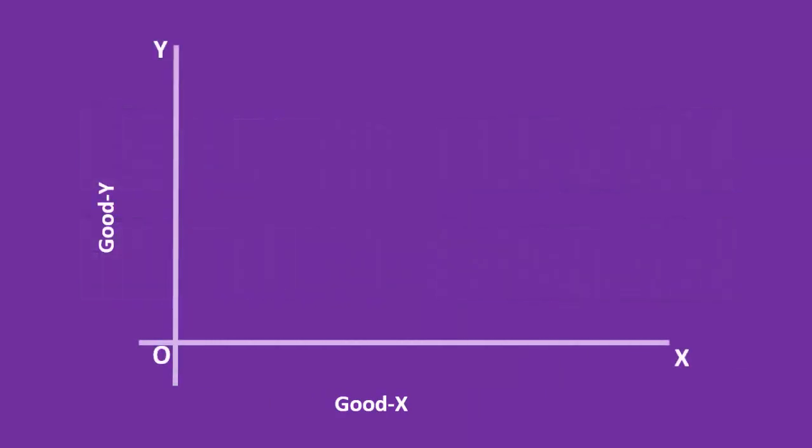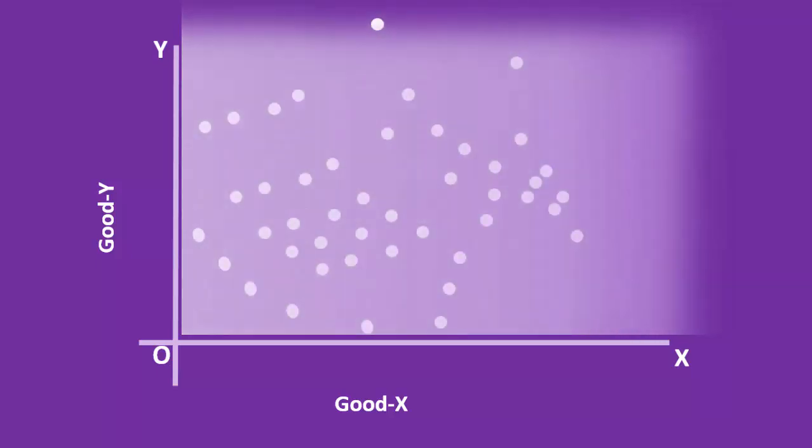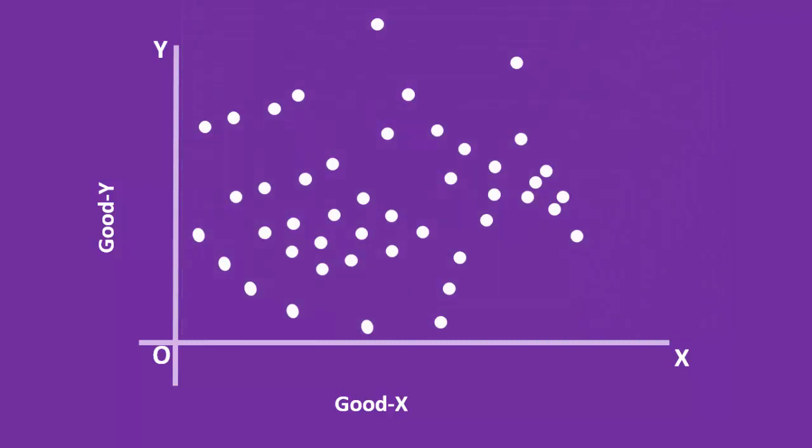Look at this graph sheet. Good y is represented along the y axis and good x along the x axis. In this space, there are uncountable number of combinations. Let us represent a few points.